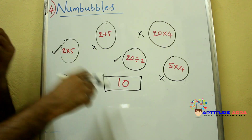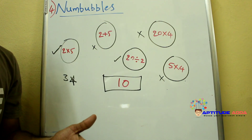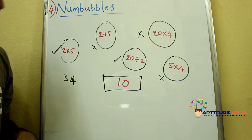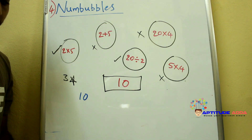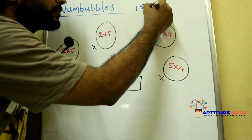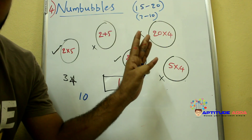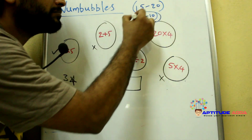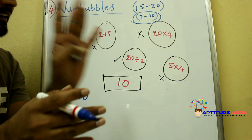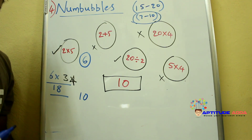You have to click on the bubble which gives this particular value. After 20 seconds you will get another number, and the bubbles change. There will be a total of 10 questions in this section and every question has 20 seconds. Within 20 seconds you will get a total of 15 to 20 bubbles, where 7 to 10 bubbles are correct. If you can click on 6 bubbles correctly you will get 6 into 3 — total 18 points.